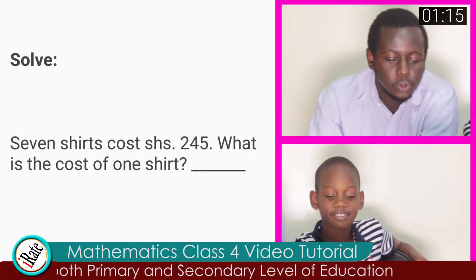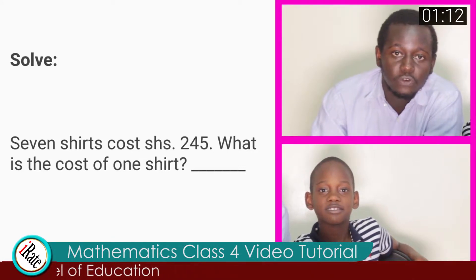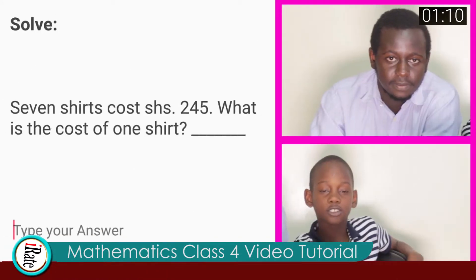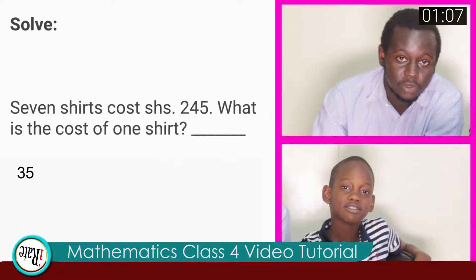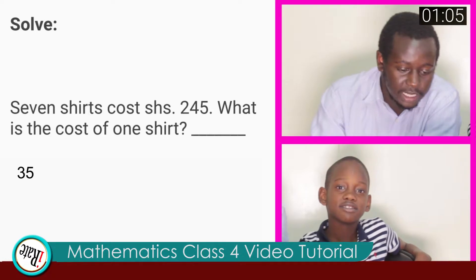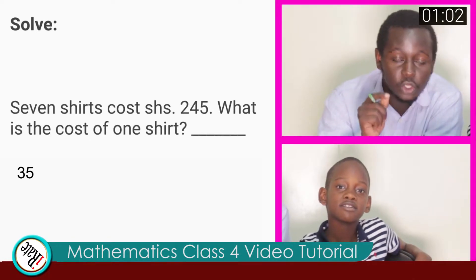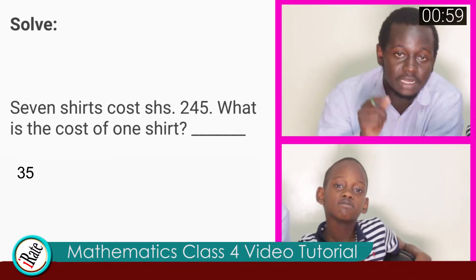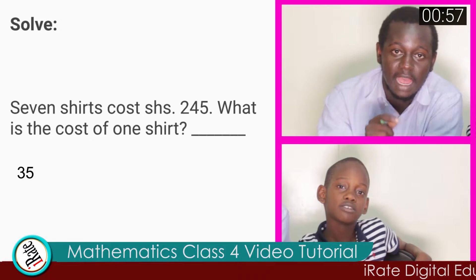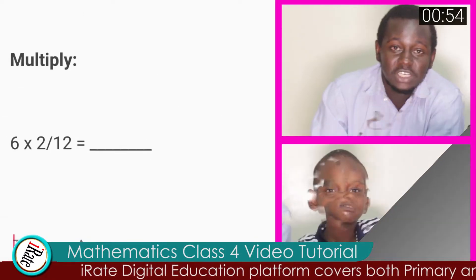So, seven shirts cost Kenyan shillings two forty-five. What is the cost of one shirt? The answer to question number eight is thirty-five. You are correct. Here, we are told to get the cost of one shirt. If seven of them cost two hundred and forty-five, then we divide two hundred and forty-five by seven and get the cost of one shirt, which is thirty-five.